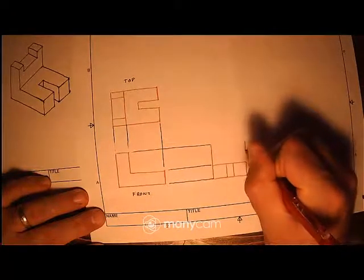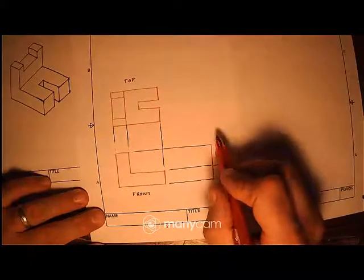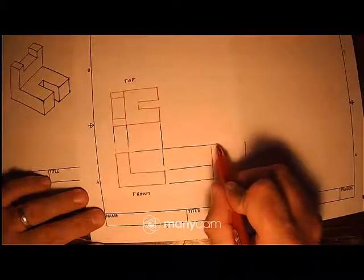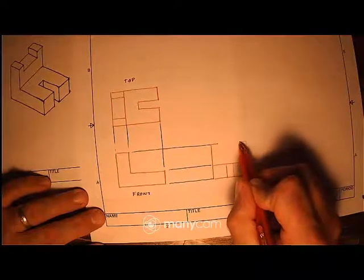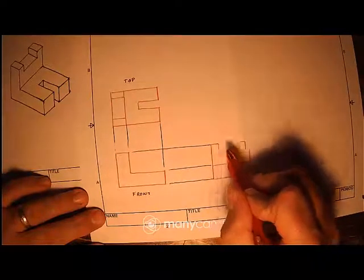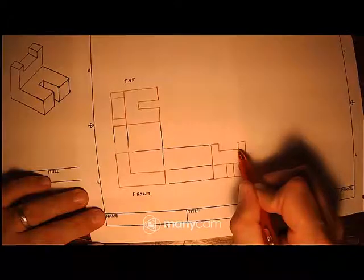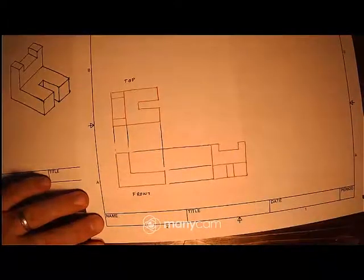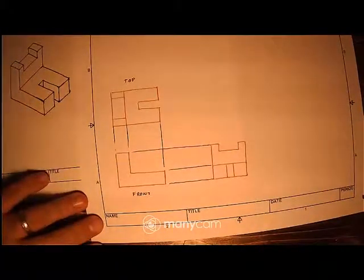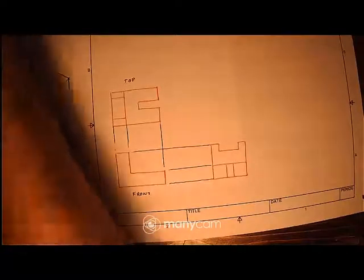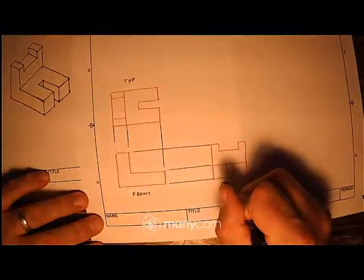We'll go ahead and extend this up. And just by looking at different views, I know that it's going to do something like this. Now what we could also have done is we could have went ahead and drawn in our hidden lines as well. So we'll call this the right side though.